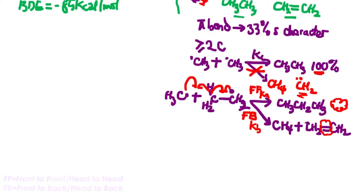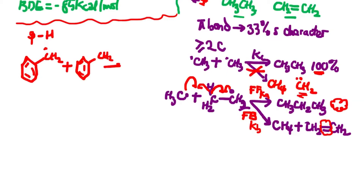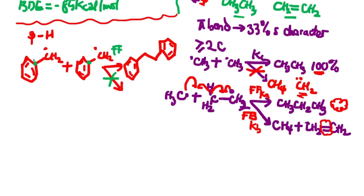The second criteria for disproportionation is that a beta hydrogen must be present. For example, a phenyl radical reacting with the same phenyl radical species undergoes a head-to-head reaction leading to the coupled product. There is no side disproportionation reaction because there is no beta hydrogen on that carbon, so we get 100 percent of the head-to-head combination product.